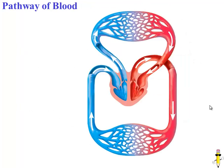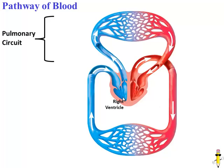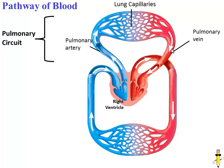Let's look at the pulmonary circuit in more detail. We'll start in the right ventricle with deoxygenated blood. The blood is pumped into the pulmonary artery, which carries the blood to the capillaries that surround the lungs. Note the color change here — once the blood gets to the capillaries around the lungs, it picks up oxygen and drops off carbon dioxide. The oxygenated blood then heads back to the heart via the pulmonary vein. This is the only vein in your body that carries oxygenated blood.